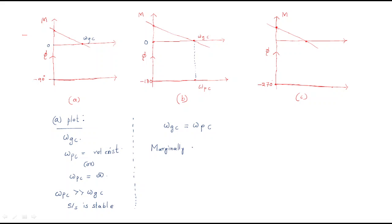To summarize plot B: where the magnitude touches zero is the gain crossover frequency. Since the phase is minus 180 everywhere, the gain crossover frequency and phase crossover frequency are equal, confirming the system is marginally stable.